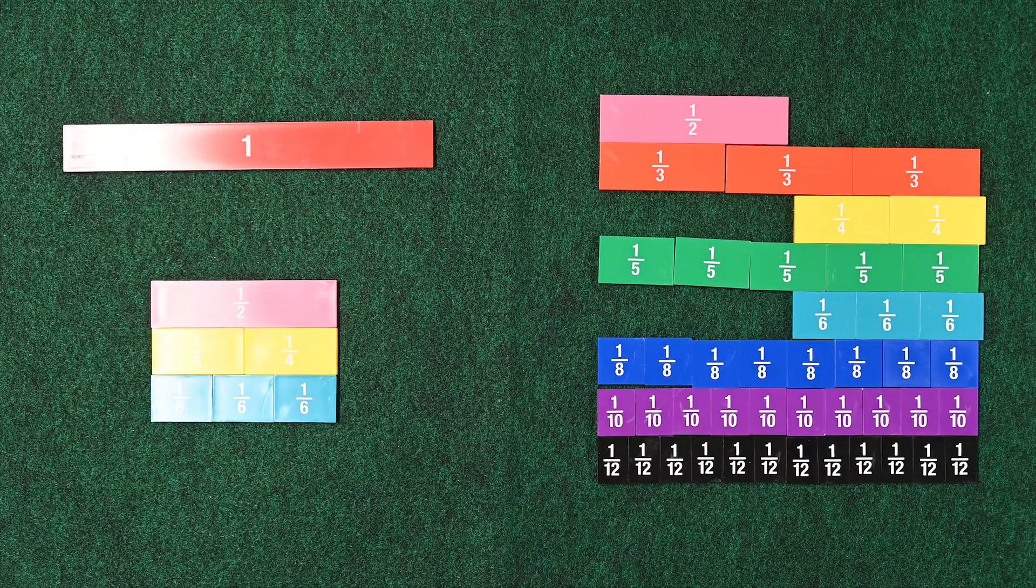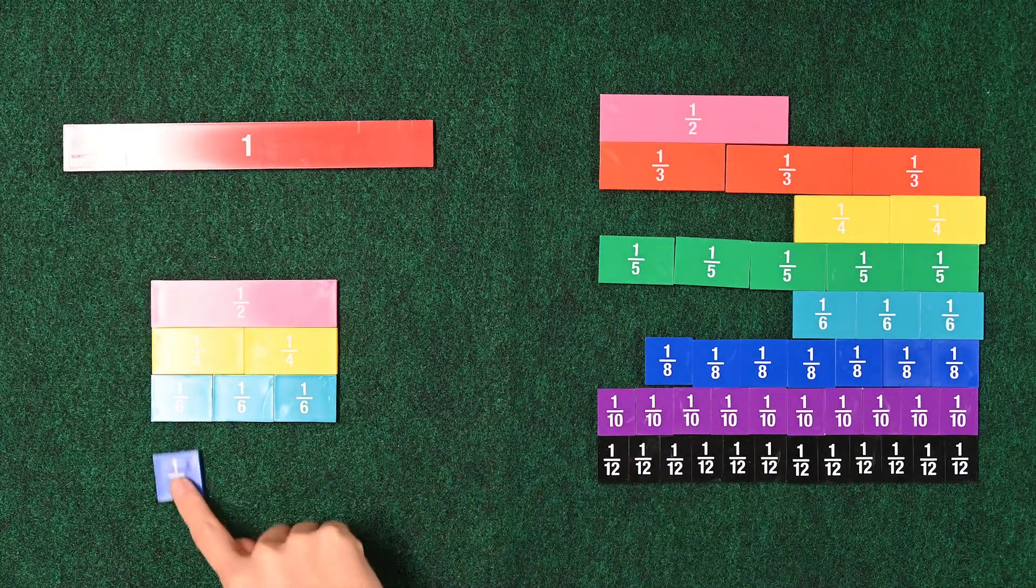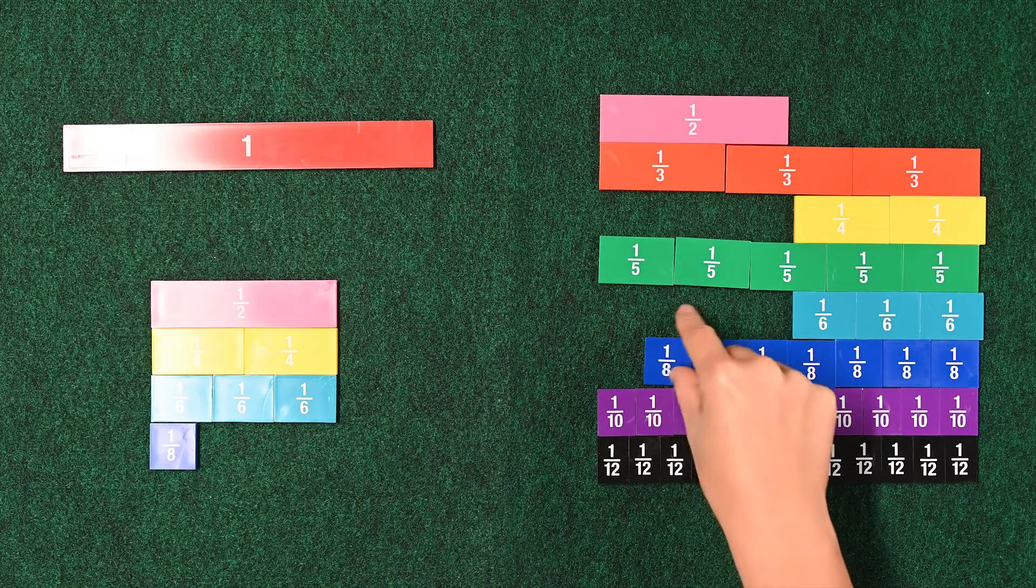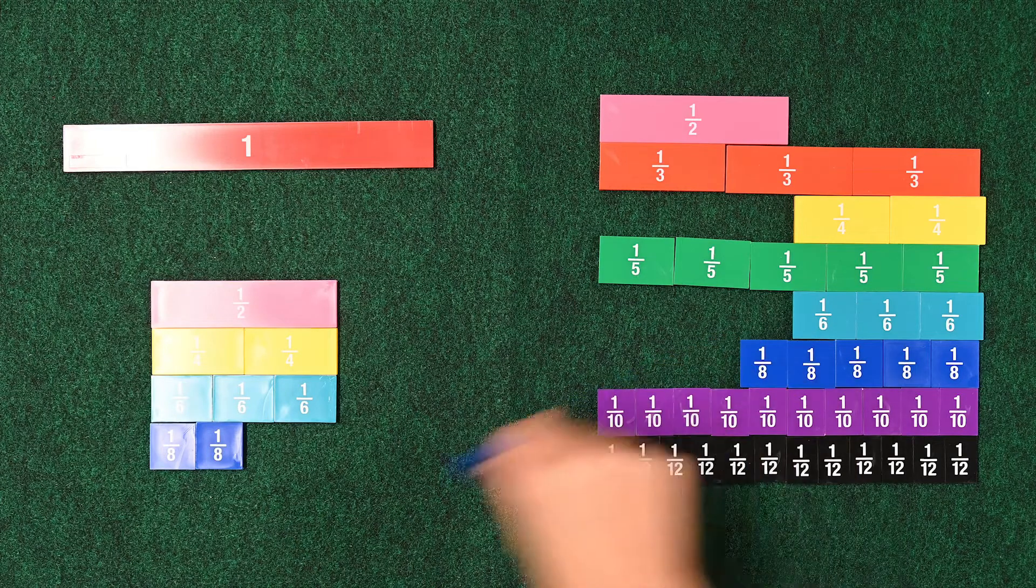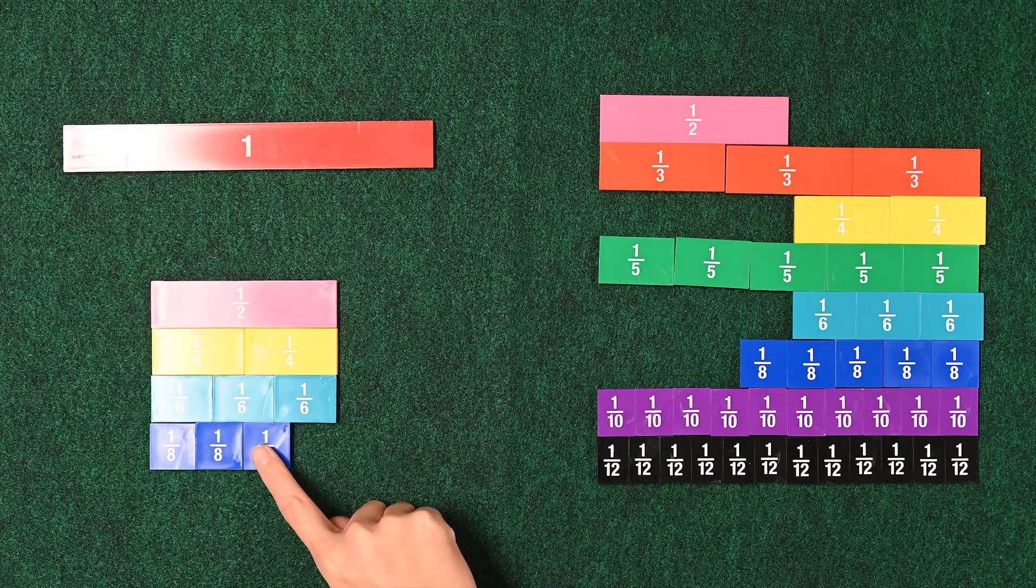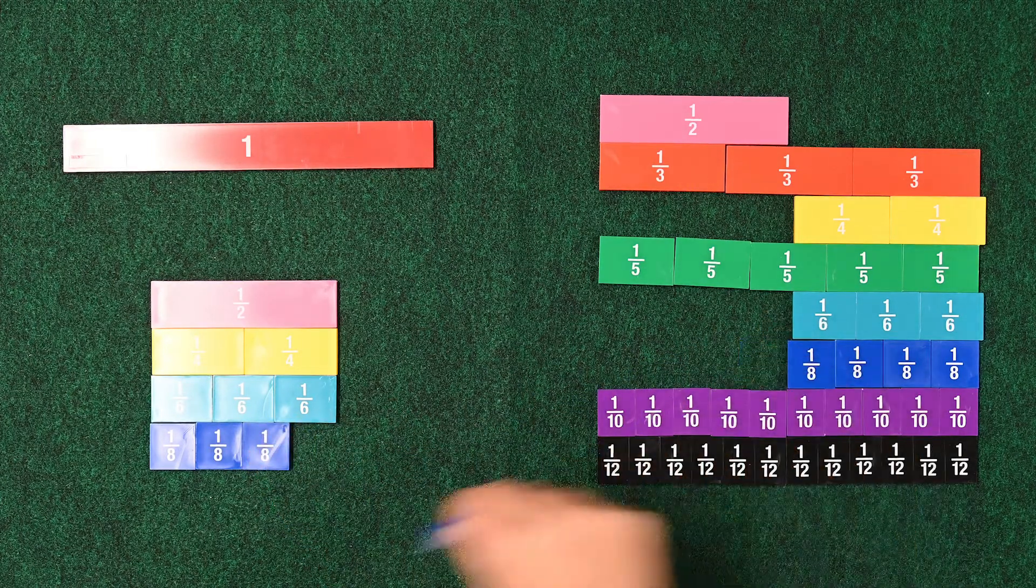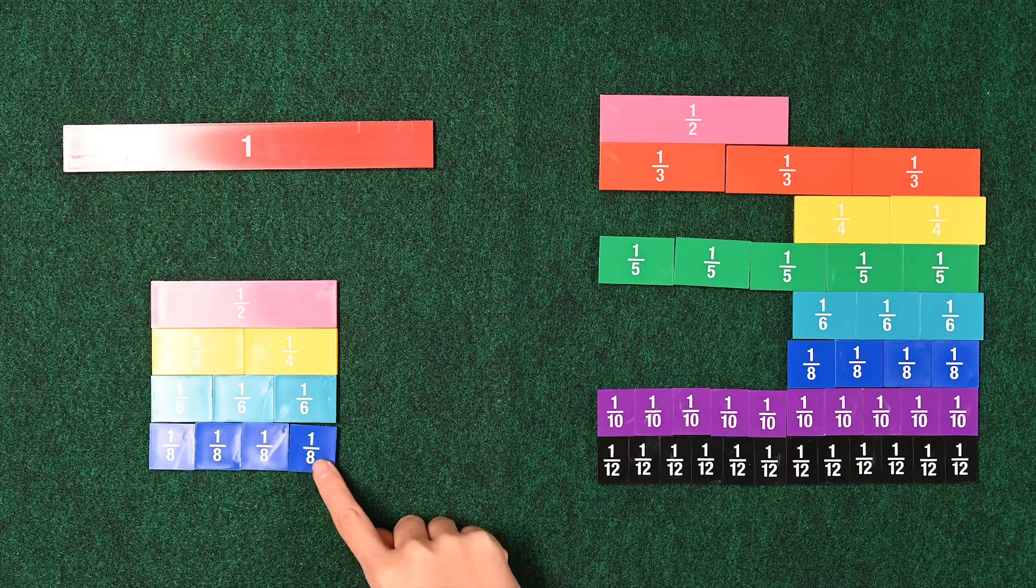Let's try it with the 8ths. 1 8th. 2 8ths. 3 8ths. And 4 8ths. 4 8ths makes 1 half.